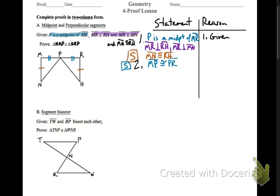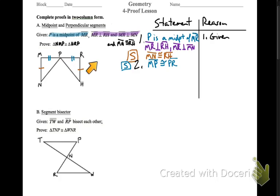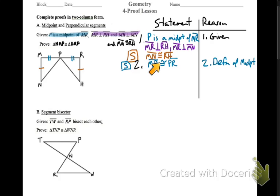Now, what does it mean to be a midpoint? To be a midpoint, P — midpoint means that we have two congruent segments: MP is congruent with PR, two sides of the triangle. So we now have two sides of each of the triangles that we've shown congruent. Where did this come from? That's the definition of a midpoint. When you know that you have a midpoint, you will have two congruent segments.